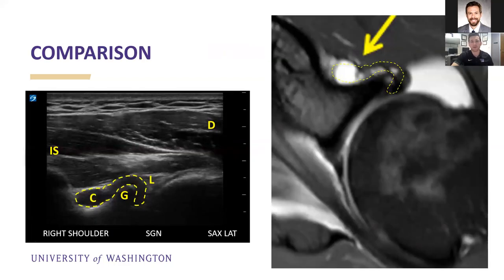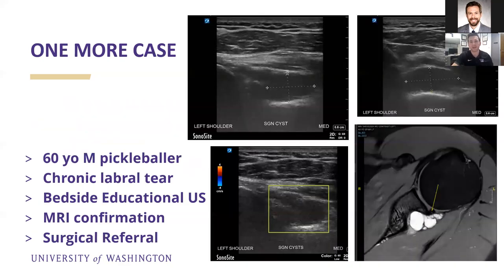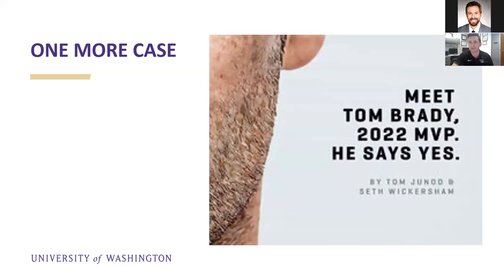Clinical outcome: we gave that patient the option to keep competing — they only had one more tournament, and they'd been dealing with this for 12 months. They ended up opting to manage non-operatively, moved to a warmer climate, and they're still playing. Here's one other case with a larger paralabral cyst in a 60-year-old pickleballer — this one went immediately to surgery. And I wanted to make sure you guys saw one really important thing on the screen — Tom Brady 2022 MVP, from an article from 2017.